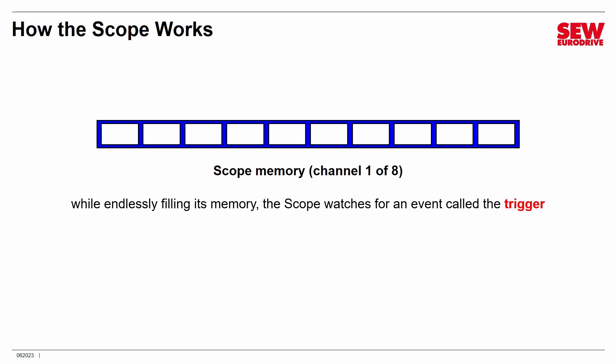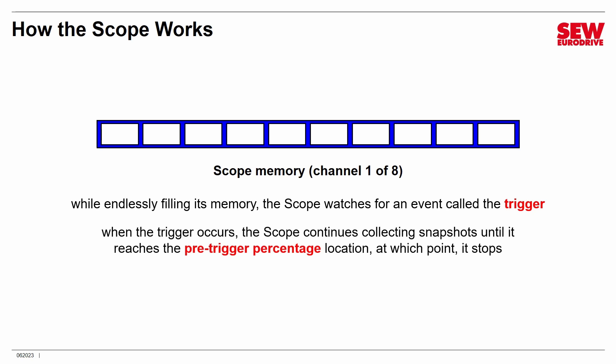The trigger basically tells the scope something important just happened, and instead of just idly collecting data and overriding it, we're now going to preserve the data because it gives us the context surrounding that trigger event. When the trigger occurs, the scope continues collecting snapshots until it reaches what's called the pre-trigger percentage location, at which point it stops collecting data. The pre-trigger percentage is a value you dial in when configuring the scope — it says how much of the data before the trigger event you want to keep and how much after.